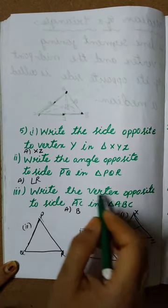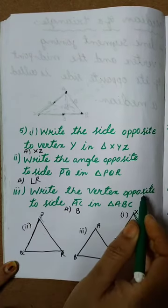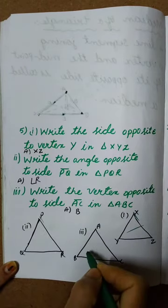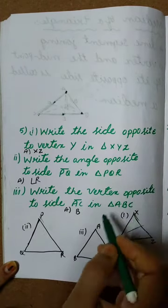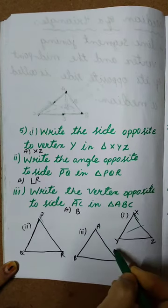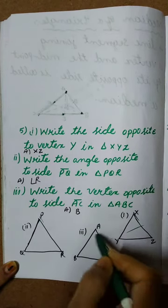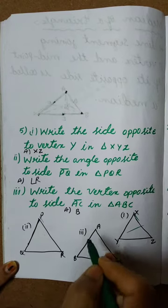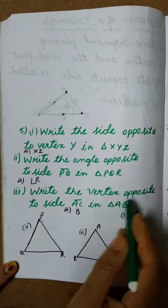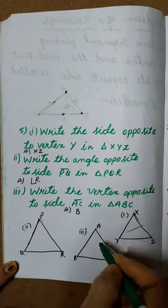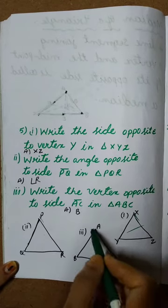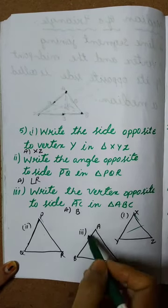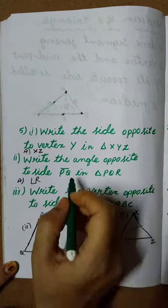Write the vertex opposite to side AC in triangle ABC. There are three vertices: A, B, C. They are asking to write the vertex opposite to side AC. Side AC is here. What is the opposite vertex? B is the opposite vertex. B is the answer.